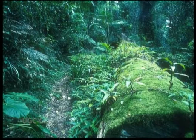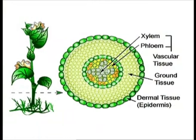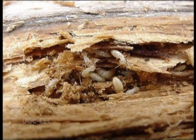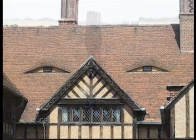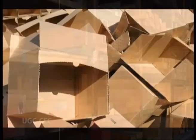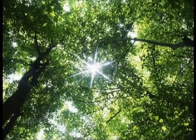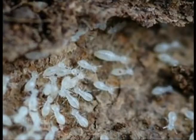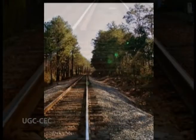Ecologically, termites play an important role in the environment by helping to break down and recycle dead wood and other plant tissues. They become pests when their appetite for wood and wood products extends to human homes, fence posts, building materials, cardboard, and other valuable products. In tropical and subtropical forests where termites are abundant, railroads must use expensive metal tiles because wooden ones are quickly destroyed.